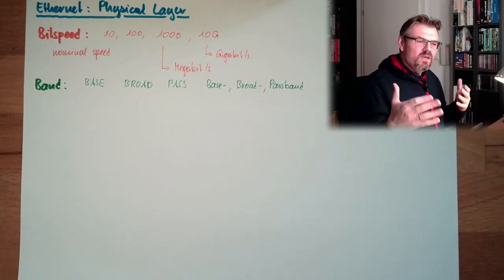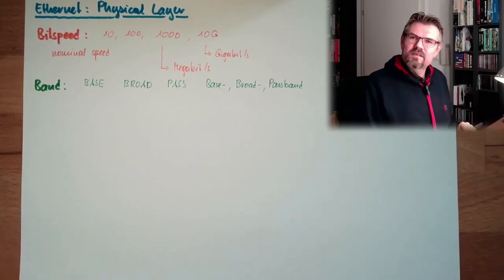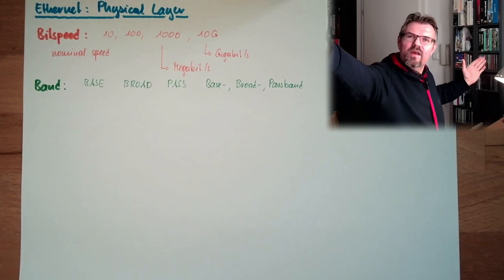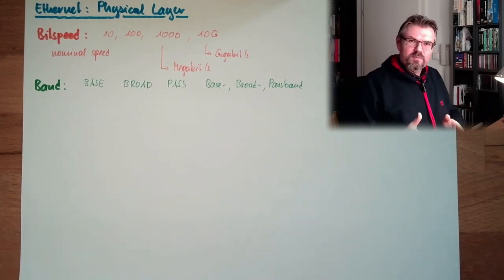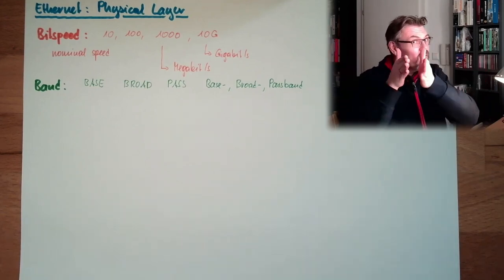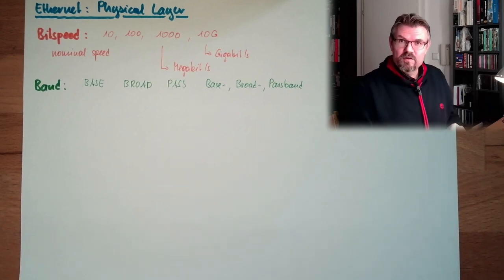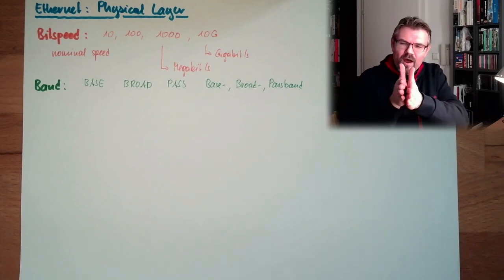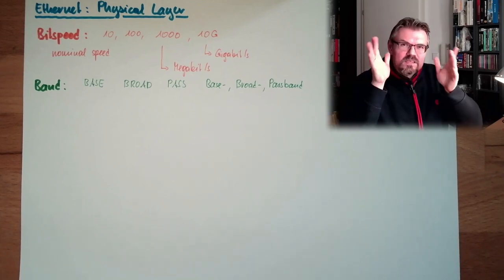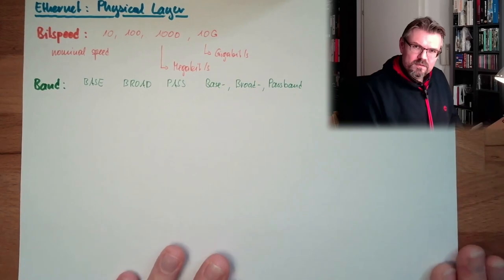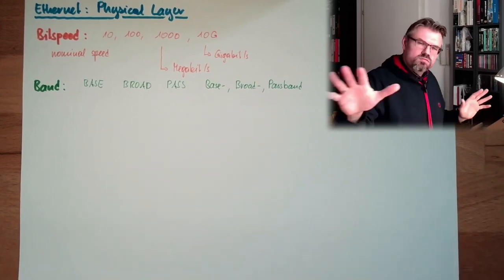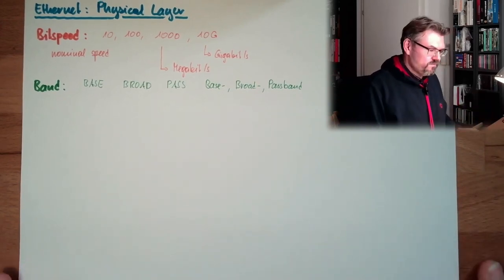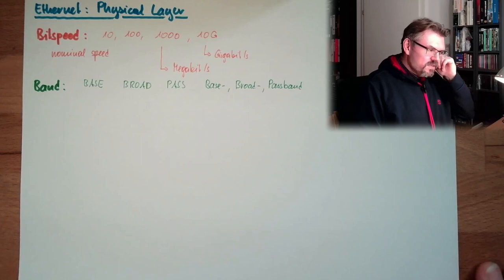Base band is the signal itself, if we're just turning it off and on. Broad band would be if we somehow modulate the signal and can use a wide area of frequencies. And pass band, we modulate the signal but can only use a small area of frequency. Pass band is usually, you can think about it like a radio station.